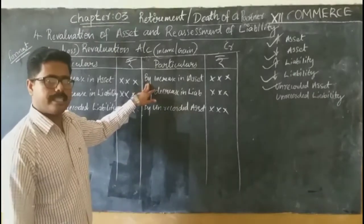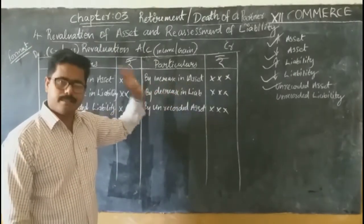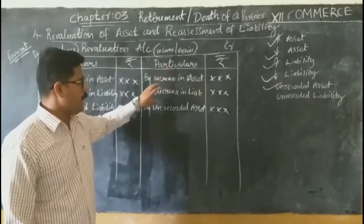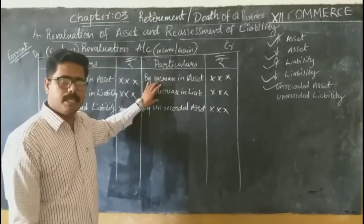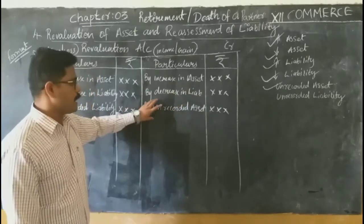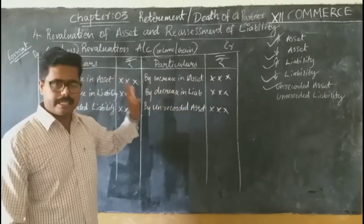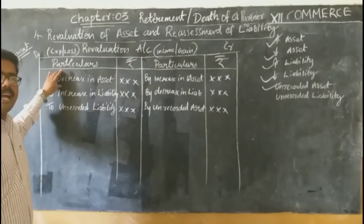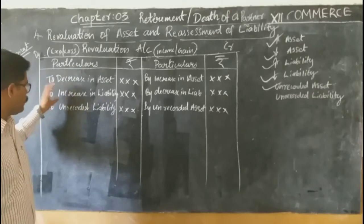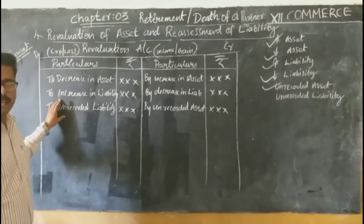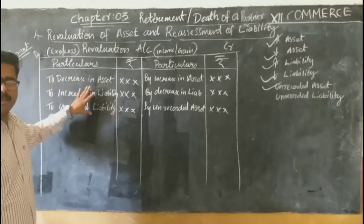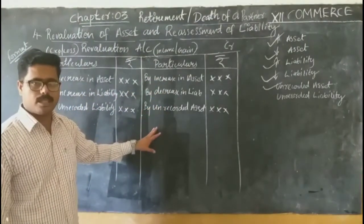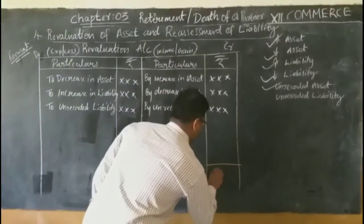To summarize: on the credit side we record increasing asset, decreasing liability, and unrecorded asset — these are incomes and gains. On the debit side we record decreasing asset, increase in liability, and unrecorded liability — these are expenses and losses. Then we balance both sides.